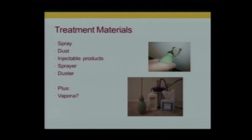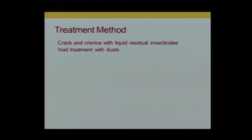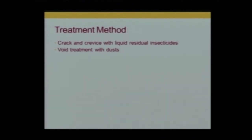There are fumigant-like materials that assist with clothing and items in a bag — one example is Vapona. And there are true fumigant gases, which are very expensive and require somebody particularly licensed. Crack-and-crevice application is the way insecticide should be applied — it goes where the insect is and where people will not come into contact with it. Void treatment with dust should go into a place inaccessible to people. Drop ceilings are a bad idea — bed bugs get up into drop ceilings but you don't want to dust a drop ceiling where an engineer might get a face full of dust.